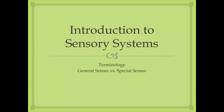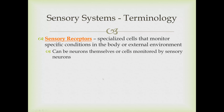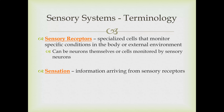In this section, we'll look at an introduction to sensory systems, some terminology, and the difference between general senses and special senses. Sensory receptors are specialized cells that monitor conditions both inside the body or in the external environment. These receptors can be neurons themselves or specialized cells monitored by sensory neurons—the dendrites or cell body of a sensory neuron is attached to these receptors. Sensation is the information arriving into your spinal cord and brain from the sensory receptors—the actual physical action potentials arriving. You haven't done any interpretation yet; this is just the raw data coming into the central nervous system.